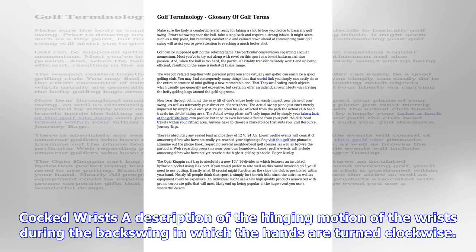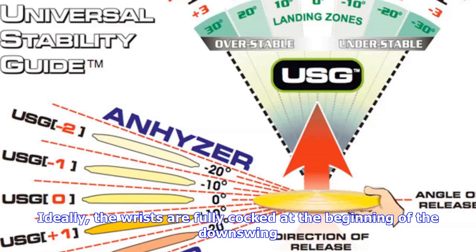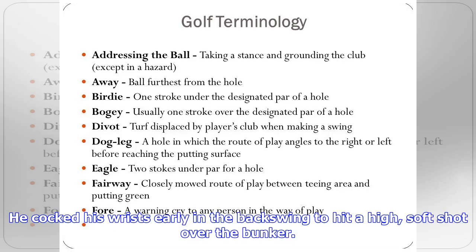Chunk: a poor shot caused by hitting the turf well behind the ball, resulting in a fat shot. The defending champion's defense ended when he chunked his tee shot on the par 3 16th and hit the ball into the pond guarding the green.